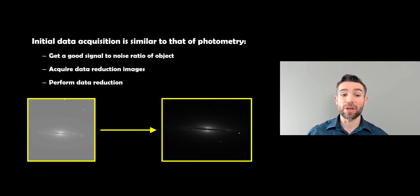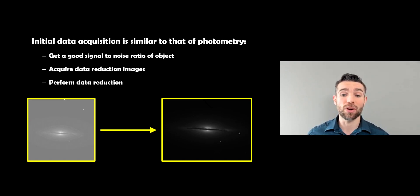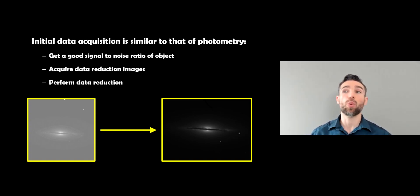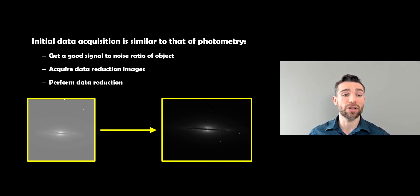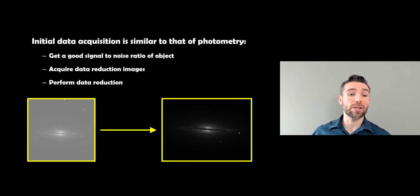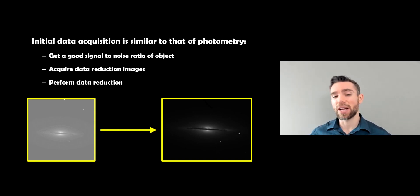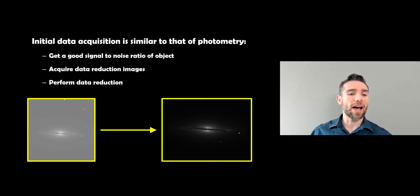How do we actually do that? Well, the first thing is we need to reduce the data or our image in the same manner as we would do photometry. Photometry is when you're measuring the intensity of light of an object, looking at the magnitude of a star. Astrometry is looking at position more so than brightness, but it's the same sort of process. You need a good signal-to-noise ratio — you don't want it overexposed and you don't want it so faint you can't pick it out. You also need to acquire your data reduction images — bias frames, flat frames, dark frames — to calibrate your equipment and remove any defects or pixel variations.